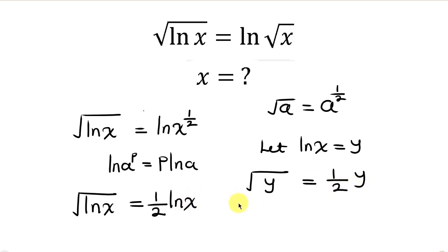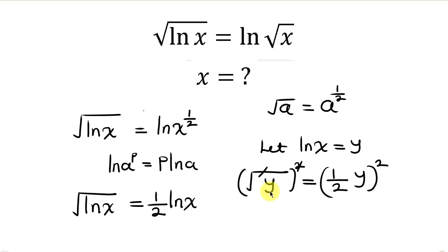Our next step is to get rid of this square root by squaring both sides. The square cancels the square root, leaving y equal to — and since squaring affects both 1 over 2 and y — we get 1 over 2 squared, which is 1 over 4, times y squared.